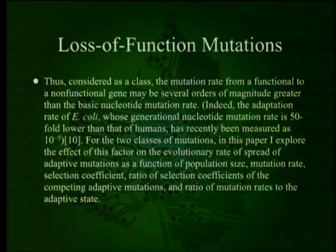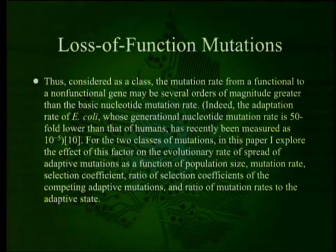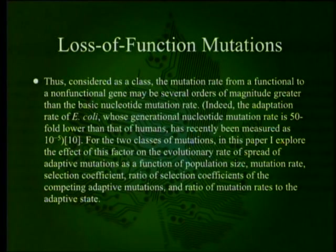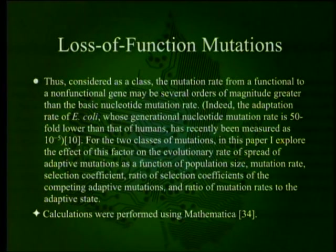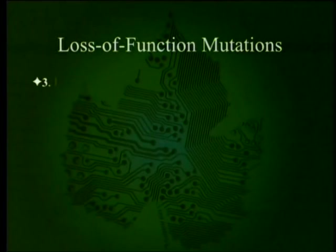Thus, considered as a class, a mutation rate for a functional to a non-functional gene may be several orders of magnitude greater than the basic nucleotide mutation rate. Indeed, the adaptation rate of E. coli, whose generational nucleotide mutation rate is 50-fold lower than that of humans, has recently been measured as 10⁻⁵. For the two classes of mutations, the paper explores the effectiveness factor on the evolutionary rate of spread of adaptive mutations as a function of population size, mutation rate, selection coefficient, ratio of selection coefficients of competing adaptive mutations, and ratio of mutation rates to the adaptive state.